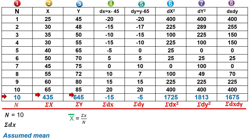Sigma X is 435. We calculate x̄ as 435 divided by n, where n equals 10, giving 43.5. Similarly, we will find the y bar value using sigma Y divided by n.